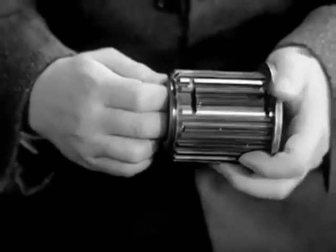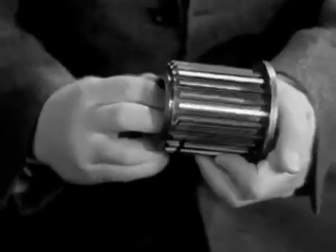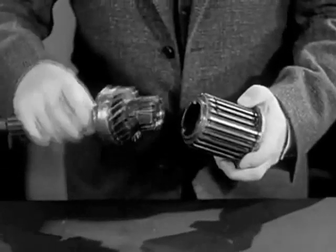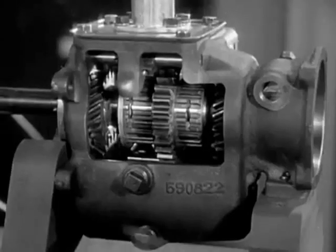When we shift into second or high, the synchronizer brings the gears to the same speed before they come together. The drums won't let the gears shift unless they are turning at the same speed.